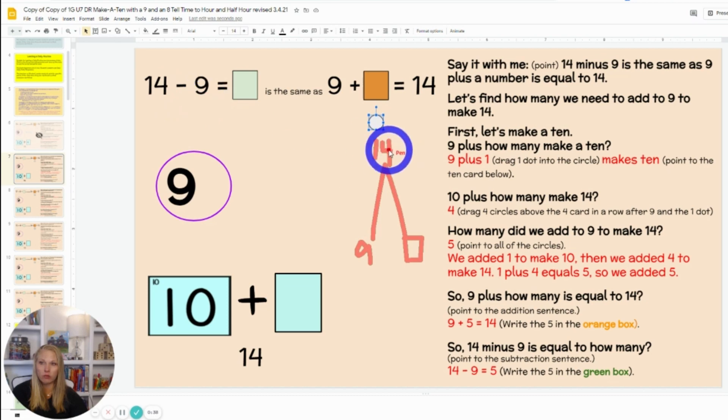So I can read it 14 minus 9 equals unknown, or I can read it 9 plus unknown equals 14. But putting it on the math mountain might help students if they're struggling to see this connection of when I want to subtract 9, I can actually turn it around, make it an addition equation, and now add on.